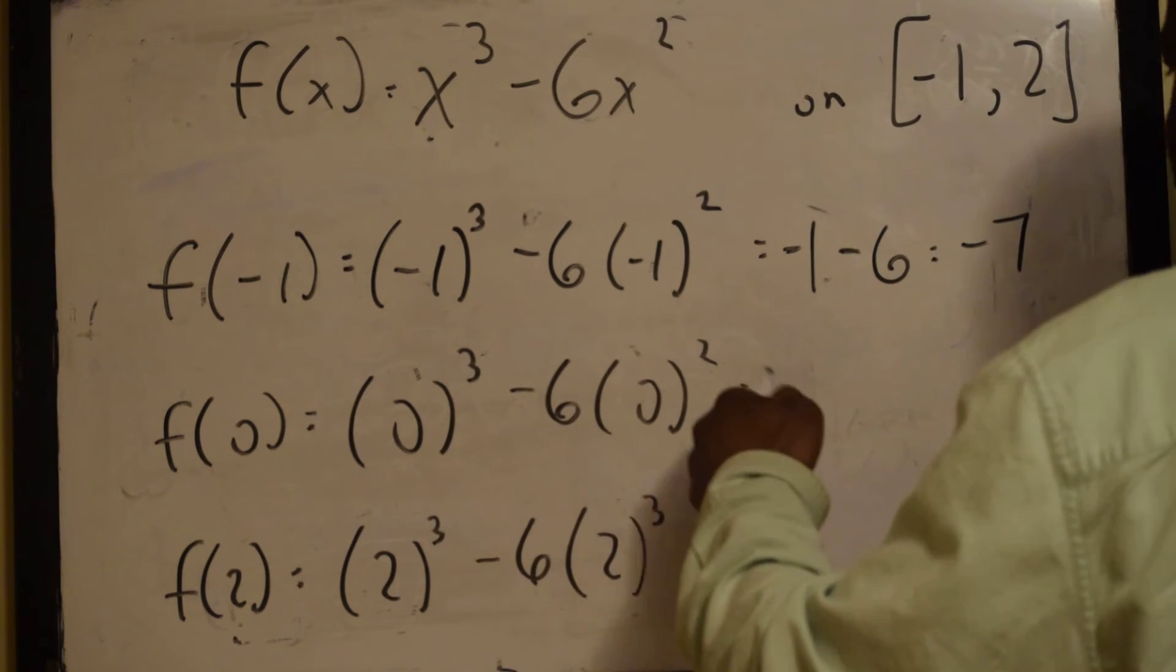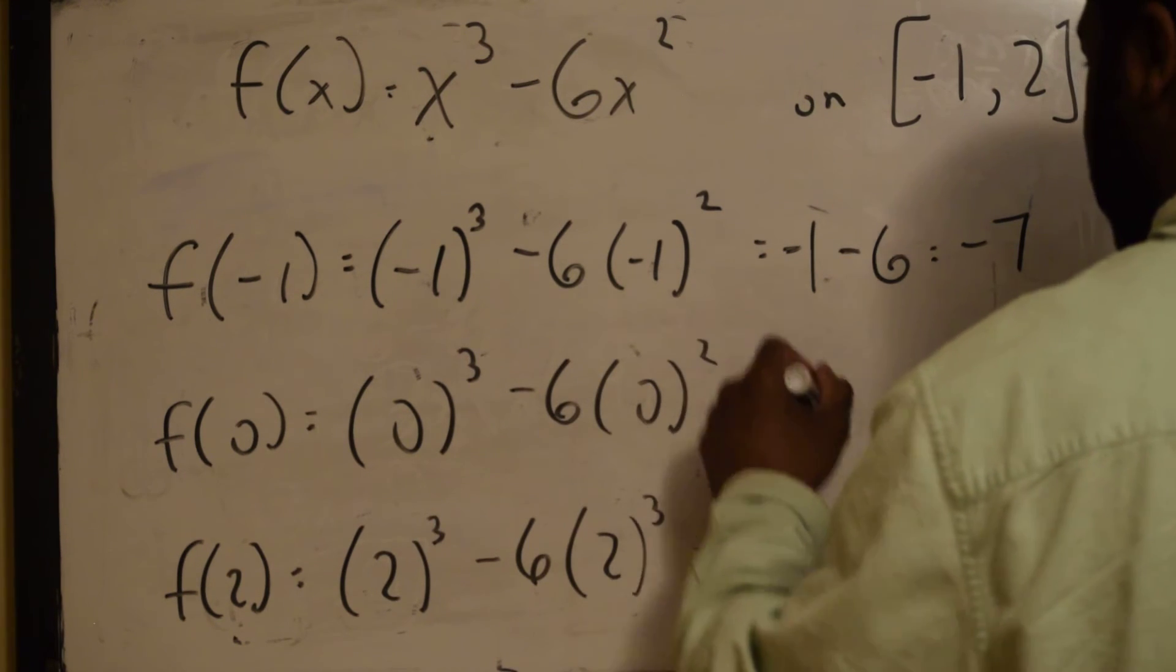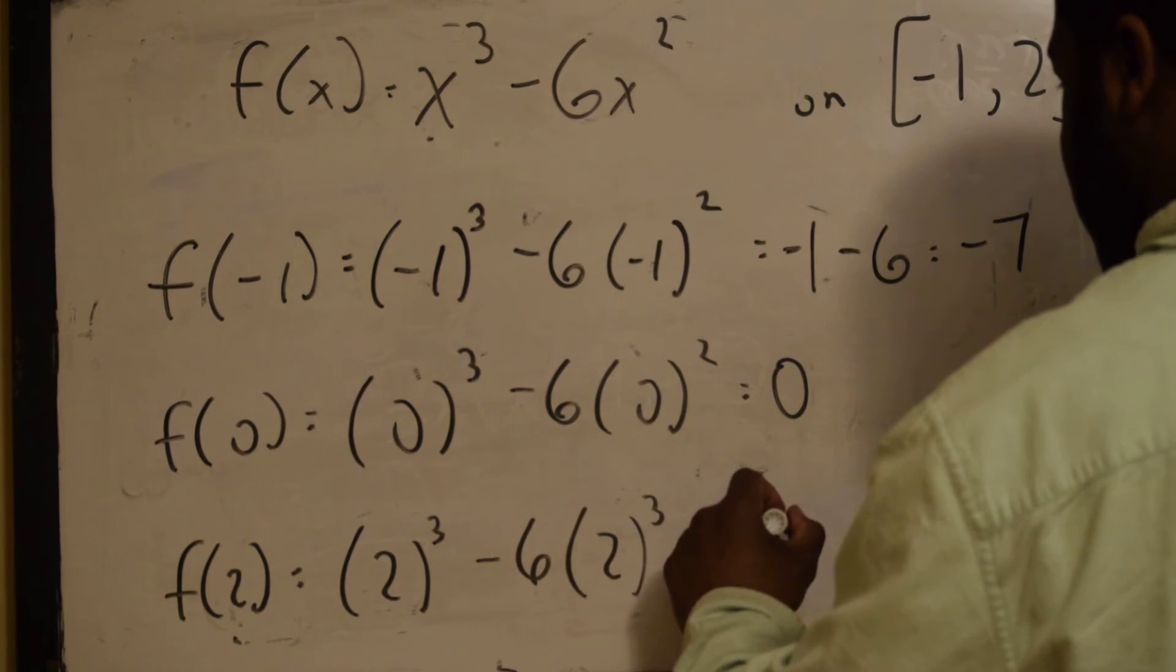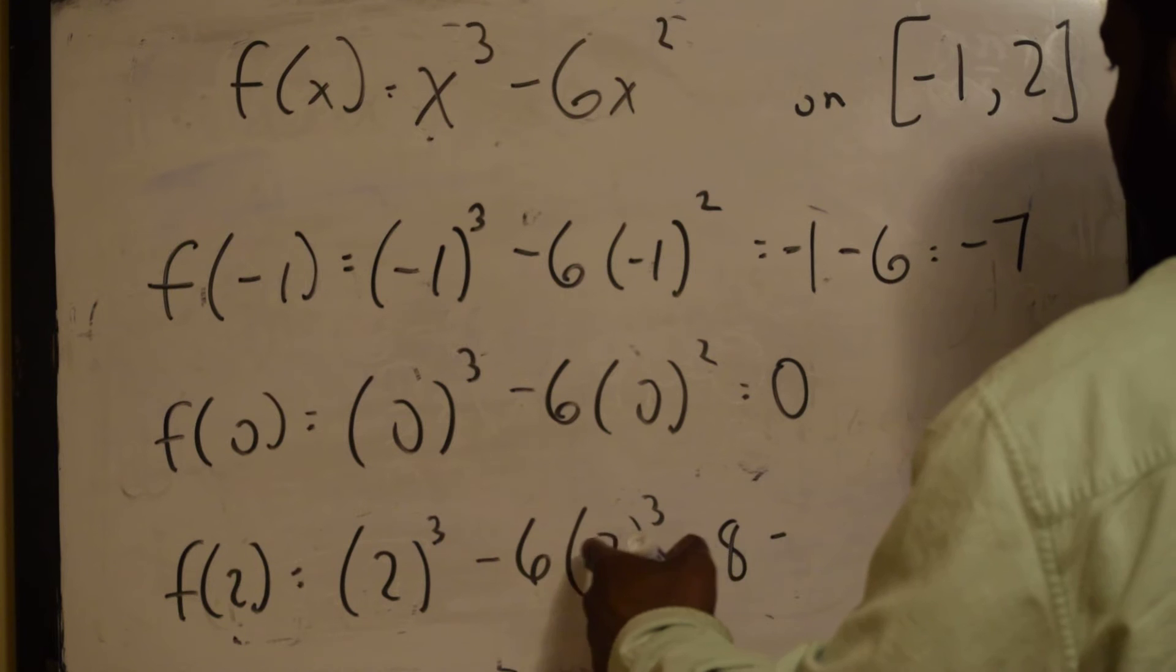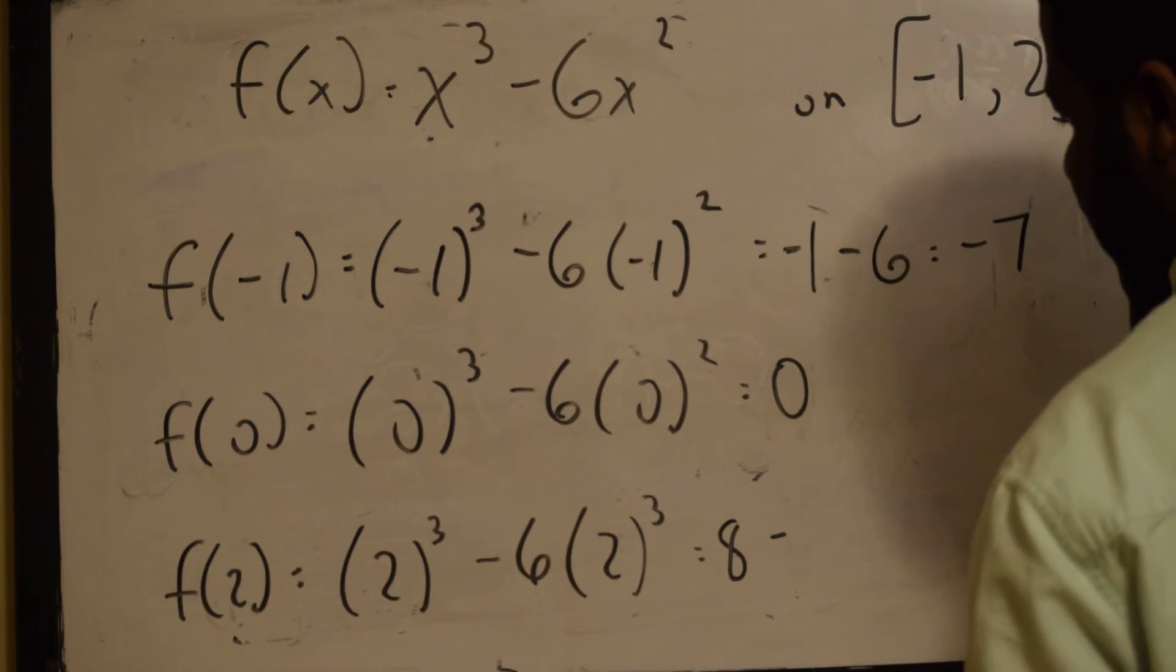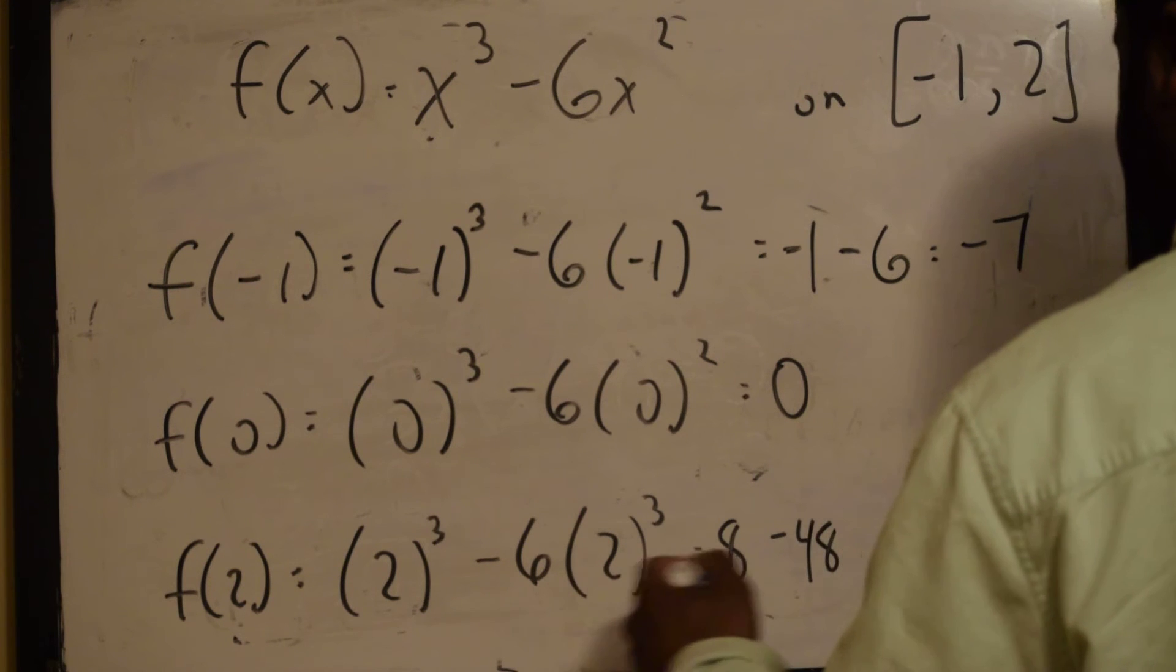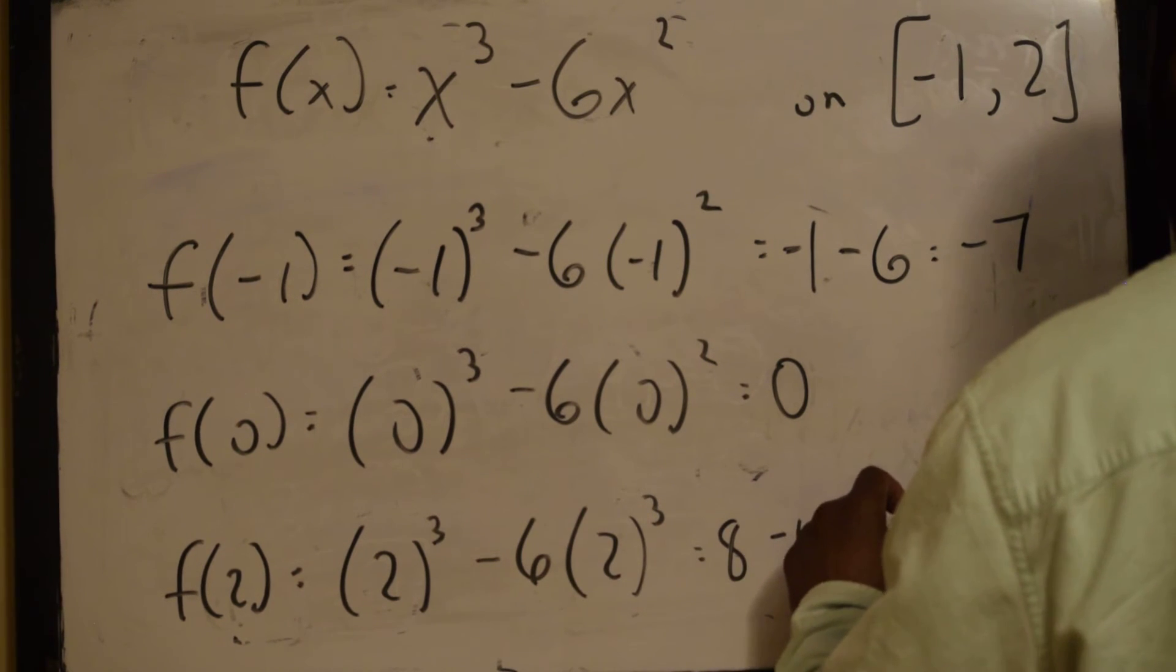0 minus 6 times 0 squared is 0. 8 minus 8 times 6 is negative 48. 8 minus 48 is equal to negative 40.